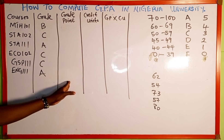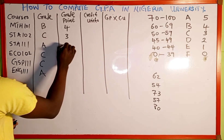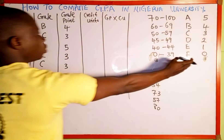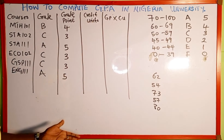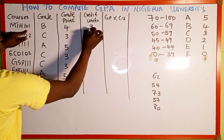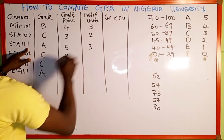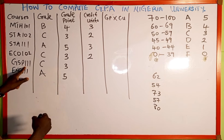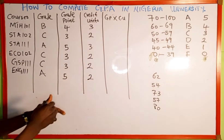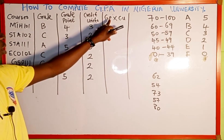Now for the grade points: B has a grade point of 4, C has a grade point of 3, A has a grade point of 5, C is 3, C is 3, and A is 5. For the credit units — suppose MTH 101 is 3 credit units, STA 102 is 2, STA 111 is 3, ECO 102 is 2, GSP 111 is 2, and ENG 111 is also 2 credit units. This is just an assumption of the credit units registered per course.